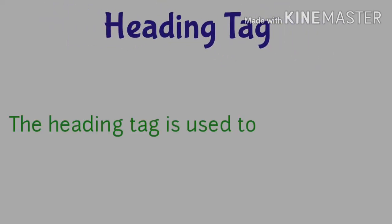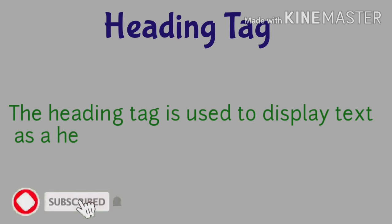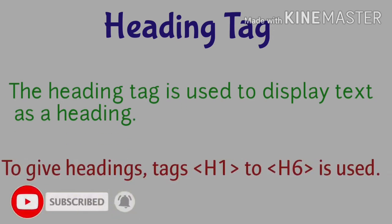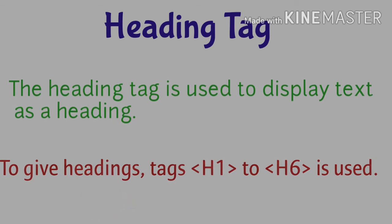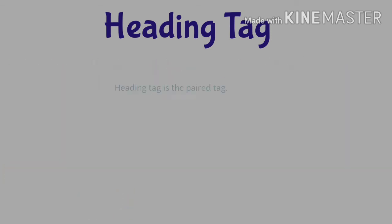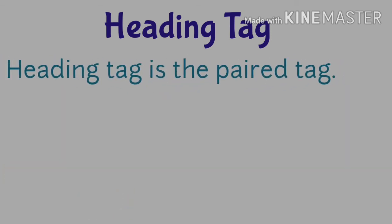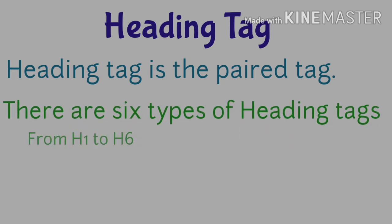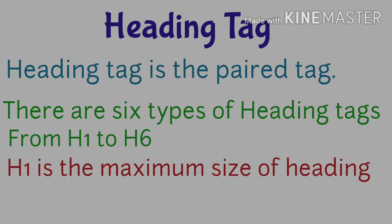The heading tag is used to display text as a heading. To give headings, tags H1 to H6 are used. The heading tag is a pair tag. There are mainly 6 types of heading tags from H1 to H6. H1 is the maximum size of heading and H6 is the minimum size of heading.